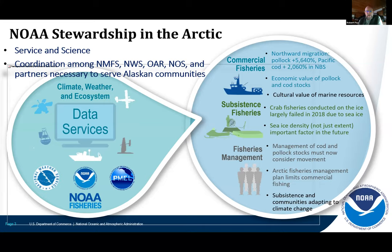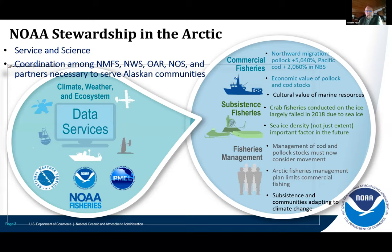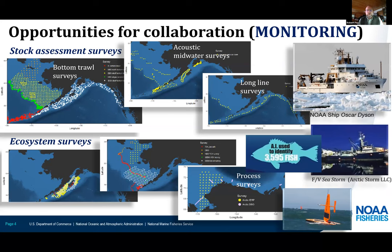Crab fisheries conducted on the ice saw immediate failures in the last few years with sea ice loss. Shifts in the types of sea ice affect marine mammal use. Management of our stocks must now consider a broader area — approximately the size of California — that was added to our portfolio overnight. Arctic fisheries management plans currently limit commercial fishing north of the Bering Strait; however, commercial stocks are moving into the Chukchi region. Communities are trying to adapt to climate change, and we need to identify, collect, model, and share the information needed.